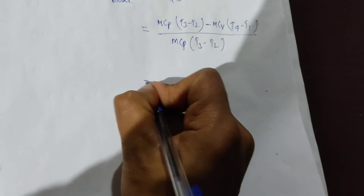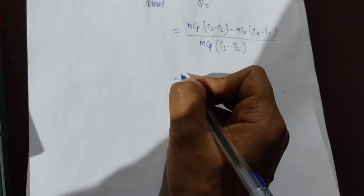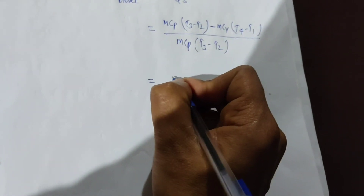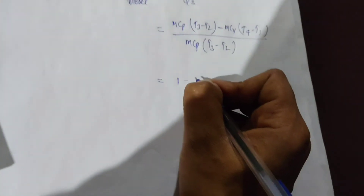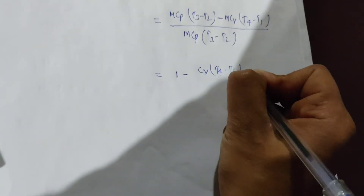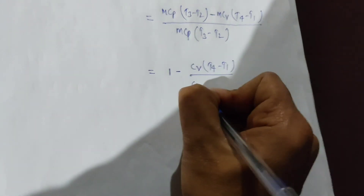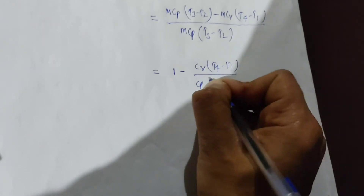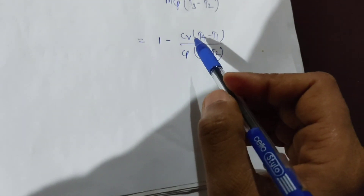So the efficiency equals 1 minus Cv·(T4 − T1) divided by Cp·(T3 − T2). The m terms cancel out. We can rewrite this as 1 minus (T4 − T1) divided by (Cp/Cv)·(T3 − T2). As we know, Cp/Cv equals gamma, the specific heat ratio.